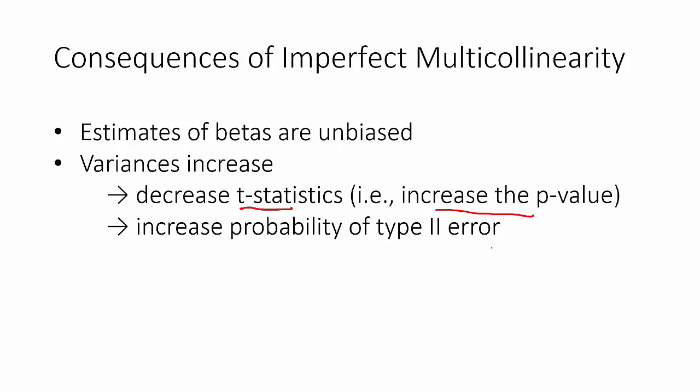Remember, a type II error is when we fail to reject a null that we should. In other words, we have a variable that should appear statistically significant, but it doesn't.